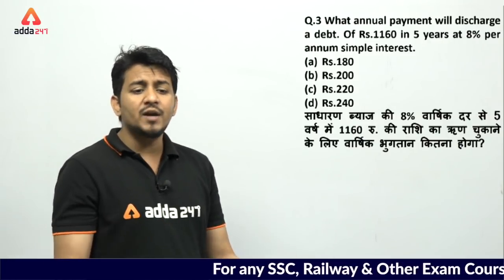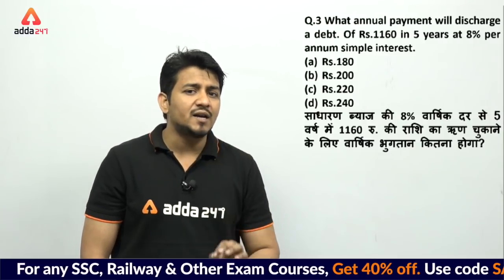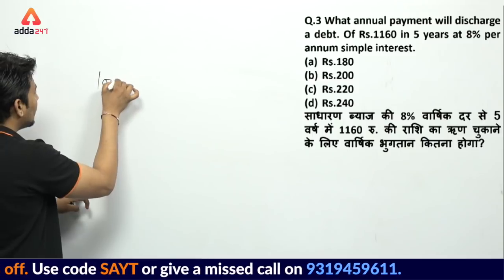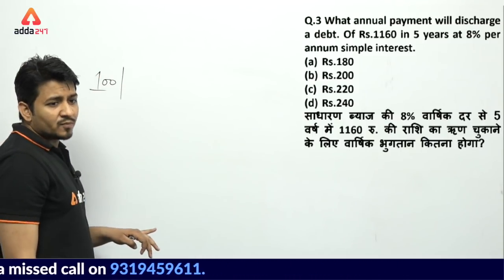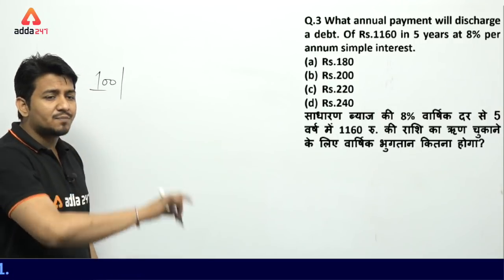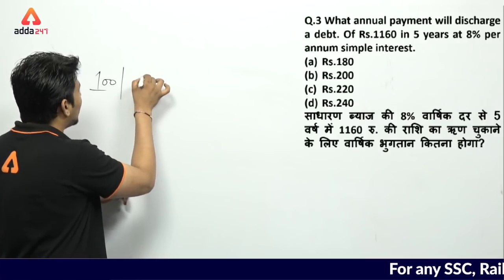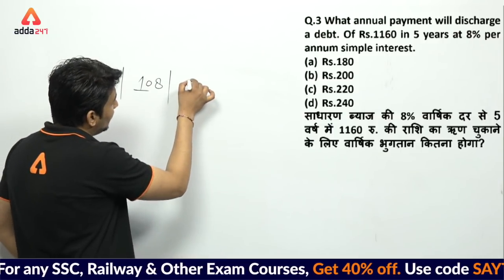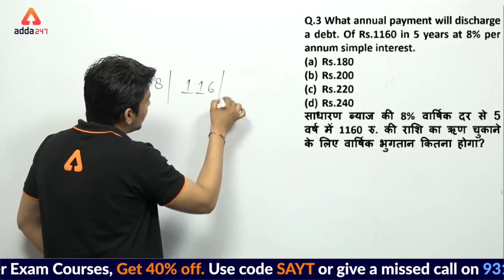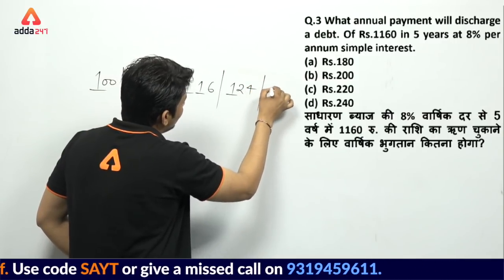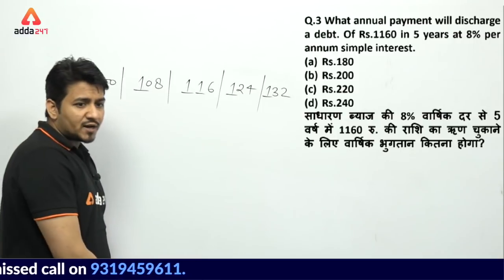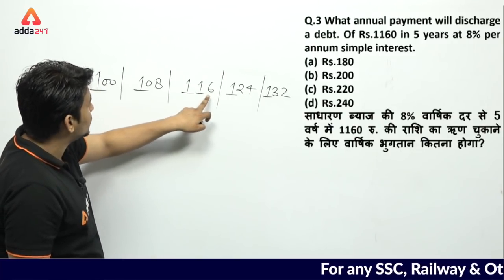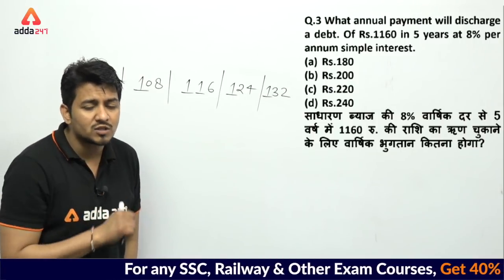How will you solve this question? No problem — it's 5 years, nothing new required. Just follow the same method as before. Assume installment is 100 rupees. Rate is 8%, so next year it becomes 108. Add 8 again → 116. Then 124, then 132. Now add all: 100 + 200 + 300 + 400 + 500 + 8 + 16 + 24 + 32 = 580 rupees total.